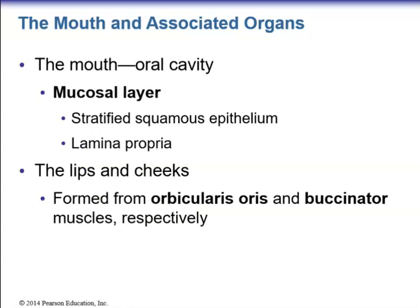The mucosal layer of the mouth is a stratified squamous epithelium and contains a lamina propria layer beneath the epithelium. The lips and cheeks are formed by the orbicularis oris and the buccinator muscles respectively. The orbicularis oris are the muscles of the mouth — not to be confused with the orbicularis oculi, the muscles of the eye. The buccinator muscles in the cheek allow you to whistle and are also considered muscles of mastication.